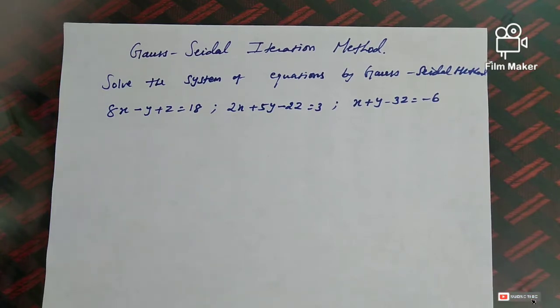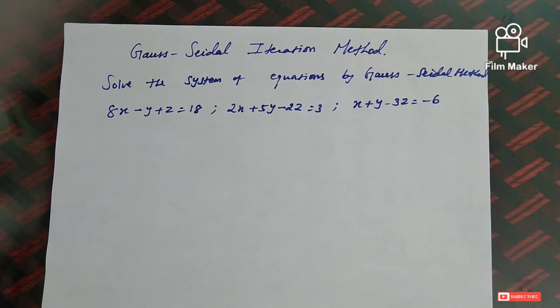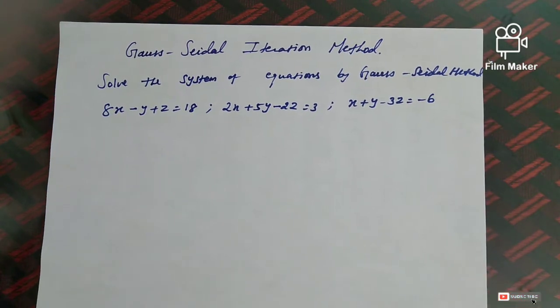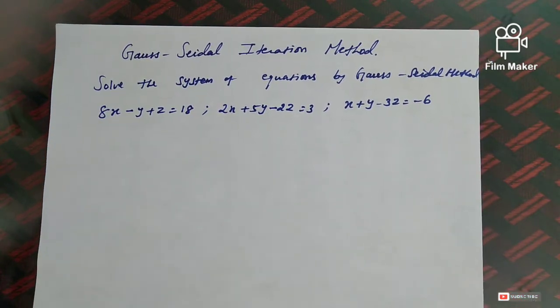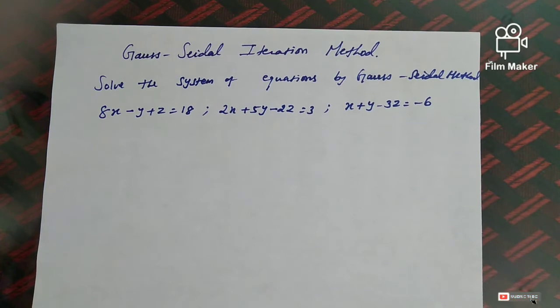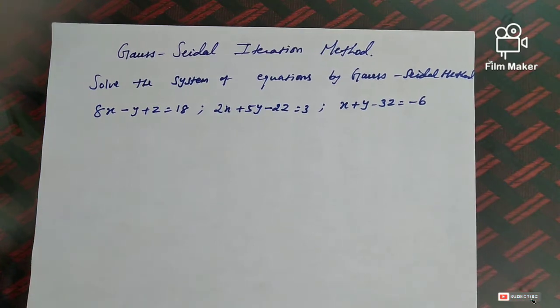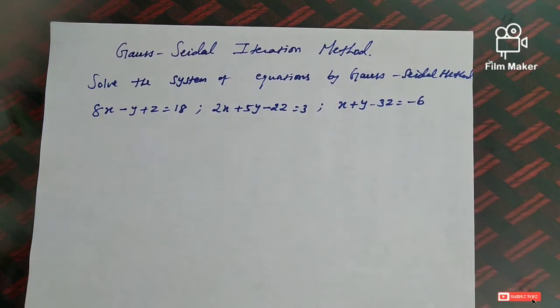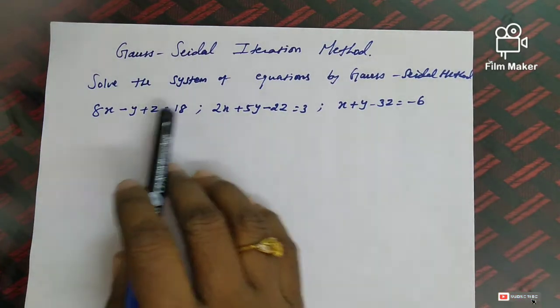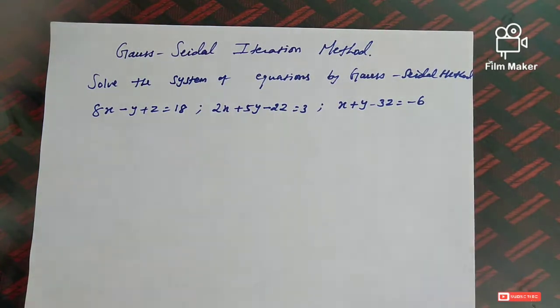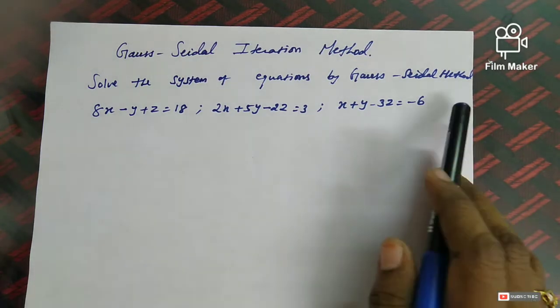Iterative methods are also called indirect methods. The first method we are going to discuss is the Gauss-Seidel iteration method. Let us solve the following system of equations by the Gauss-Seidel method.